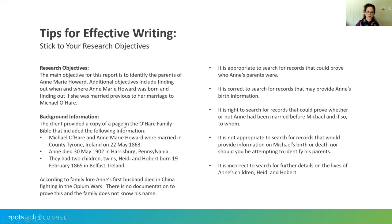Background information was provided: the client gave a copy of the O'Hare family Bible, which recorded that Michael O'Hare and Ann Marie were married in County Tyrone, Ireland on the 22nd of May 1863. Ann died the 30th of May 1902 in Harrisburg, Pennsylvania. They had twin children, Heidi and Hobart, born in Belfast, Ireland. According to family lore, Ann's first husband died in China fighting in the Opium Wars, but there was no documentation to prove that fact.